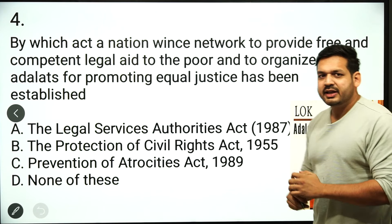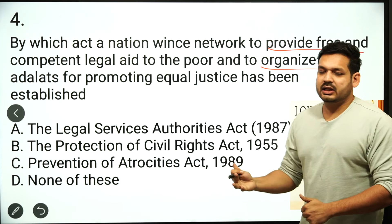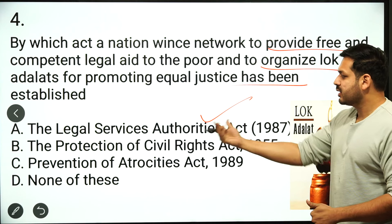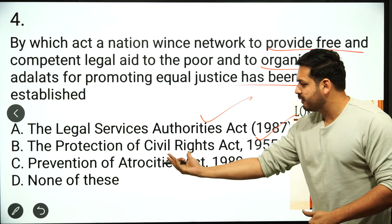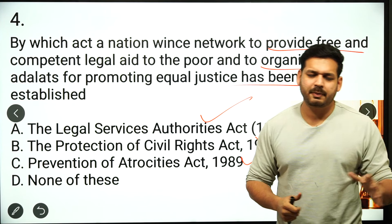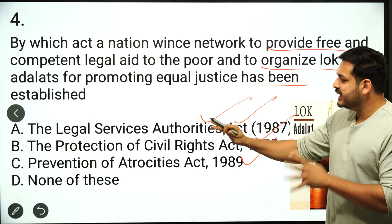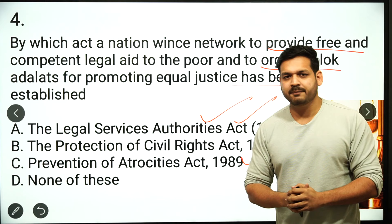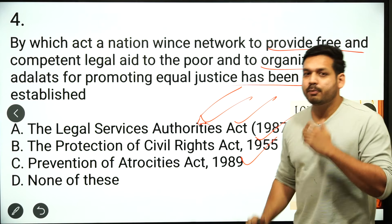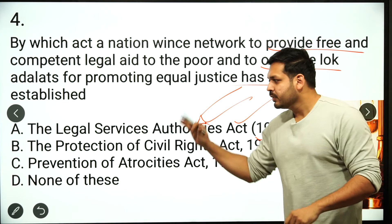The fourth question: which act provides free and competent legal aid to the poor and organizes Lok Adalats for promoting equal justice? The options are: Legal Services Authority Act 1987, Protection of Civil Rights Act 1955, Prevention of Atrocities Act 1989, or none of these. The correct answer is option A — the Legal Services Authority Act 1987 was passed. Which article mentions legal aid to the poor? You will mention the article number in the comment box. The correct answer is option number A.